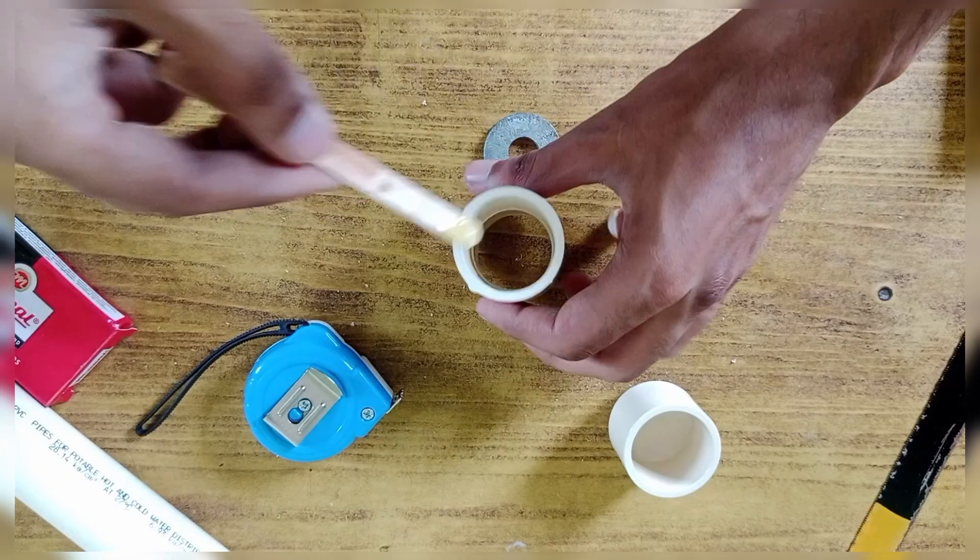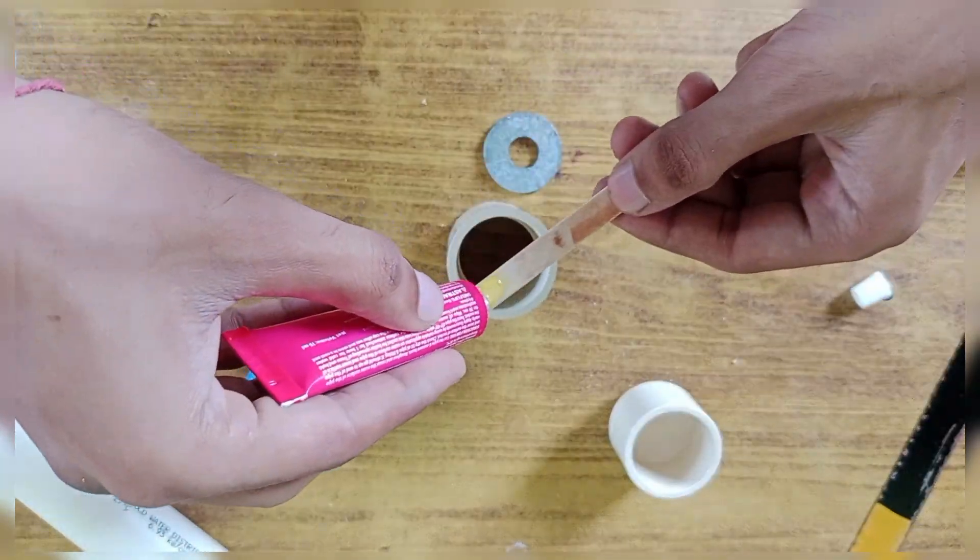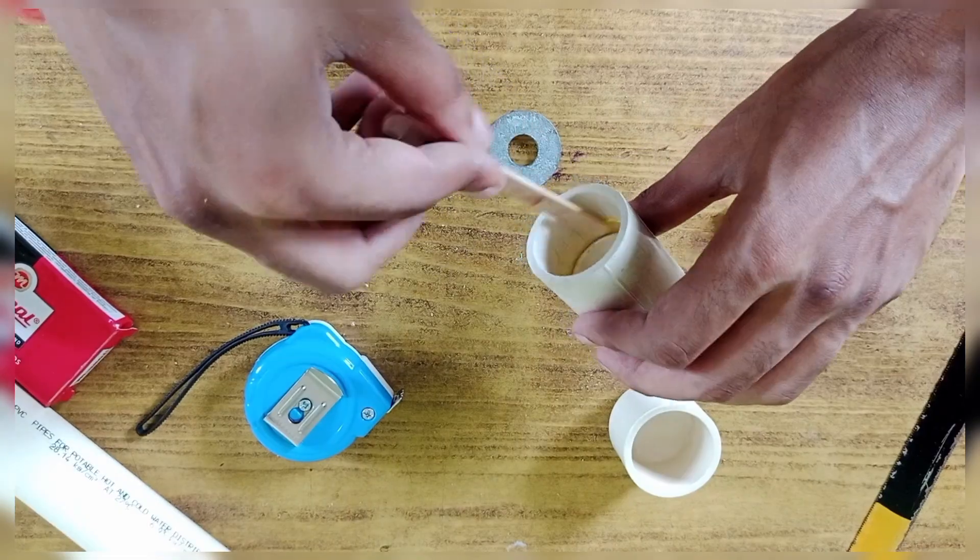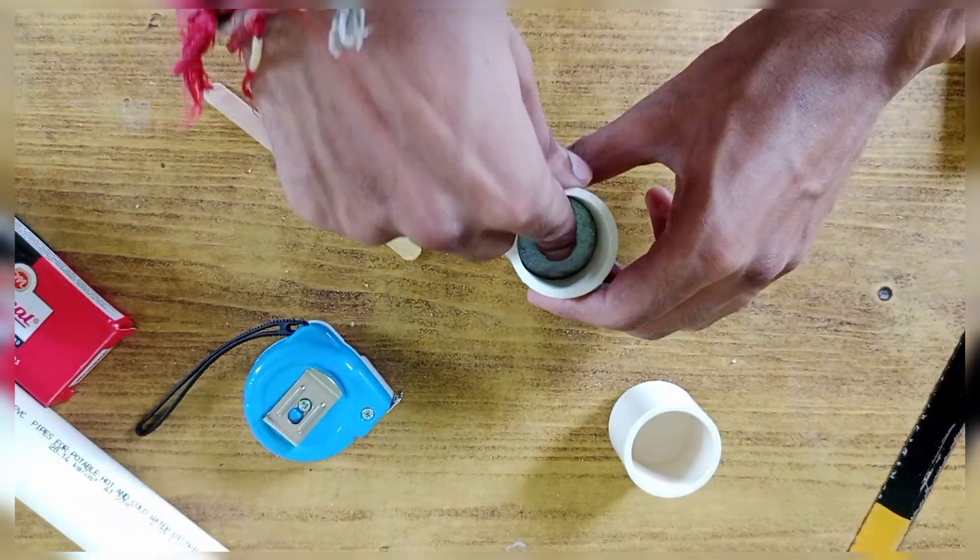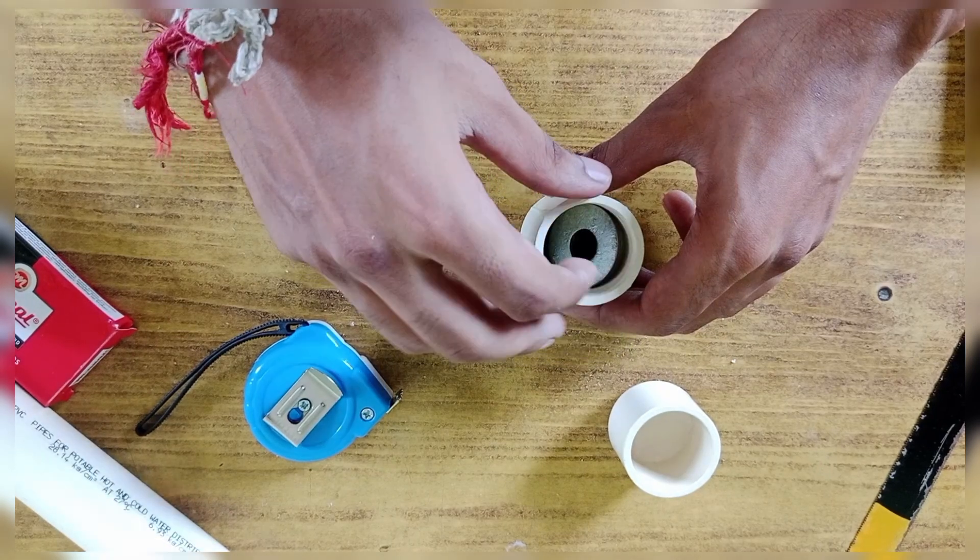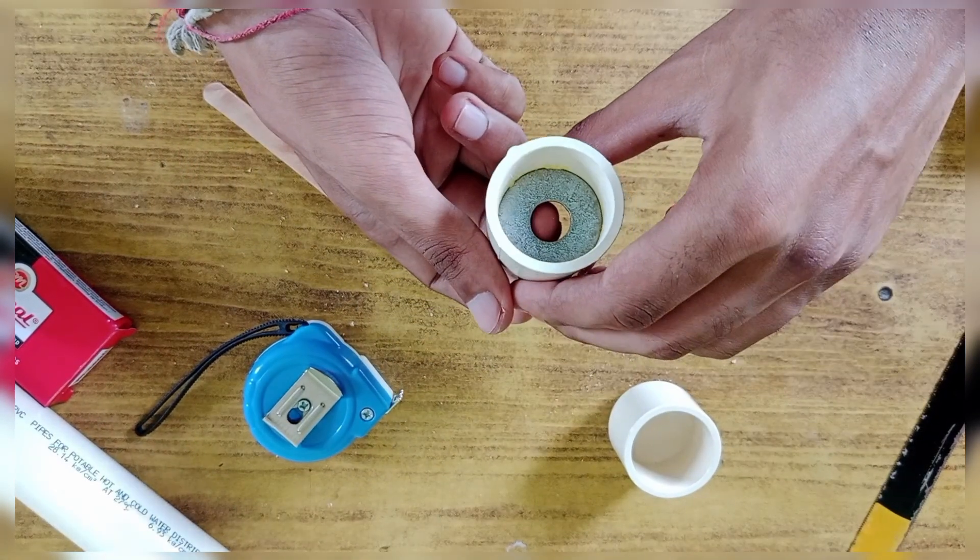First, I glued a washer inside the jointer. Luckily, the jointer had a small inner edge that helped hold the washer in place.